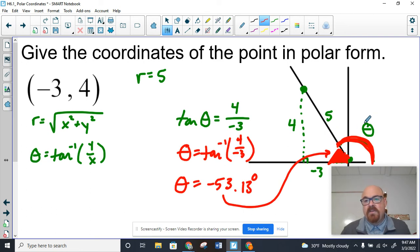So theta, which is supposed to be this angle, which is supposed to be in standard position, would be 180 minus 53.13. And that's 120, we'll call that 126.87 degrees approximately.